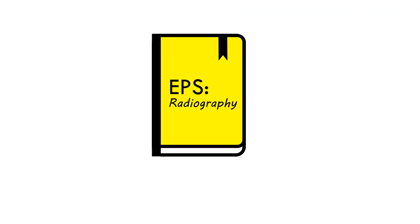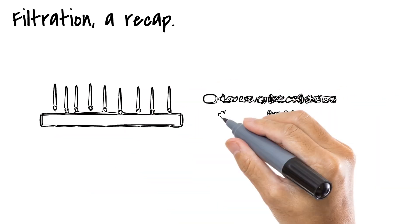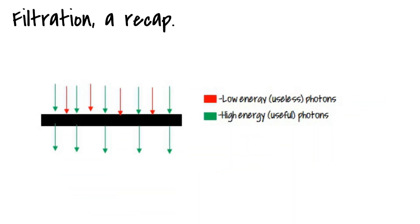Welcome back to EPS Radiography. I'm Michael. Filters are placed at the exit port of an X-ray tube. They help to absorb X-ray photons that have too little energy to contribute to the image.